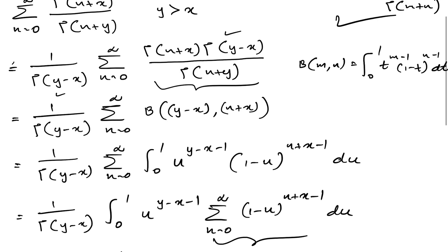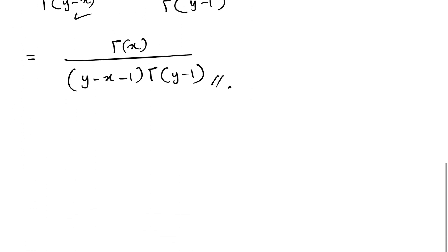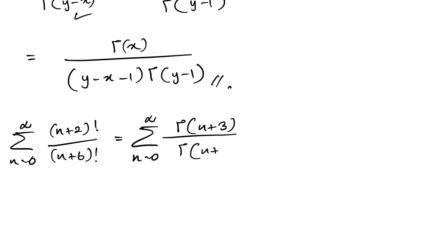This is the generalized answer. Now let's move to our original question. We have the infinite sum from 0 to infinity of (n+2)! over (n+6)!, which equals the sum from 0 to infinity of gamma(n+3) over gamma(n+7). We generalize this using the formula we derived.